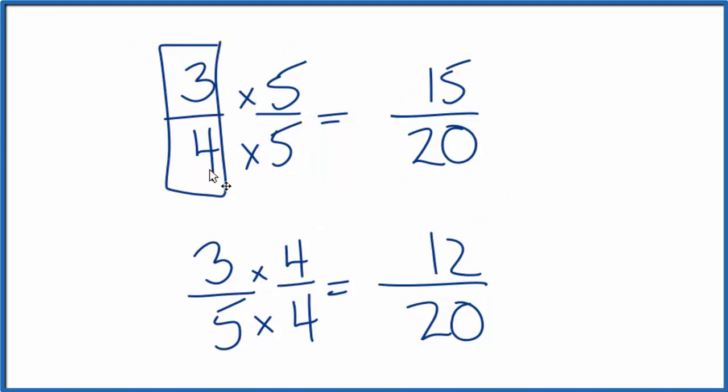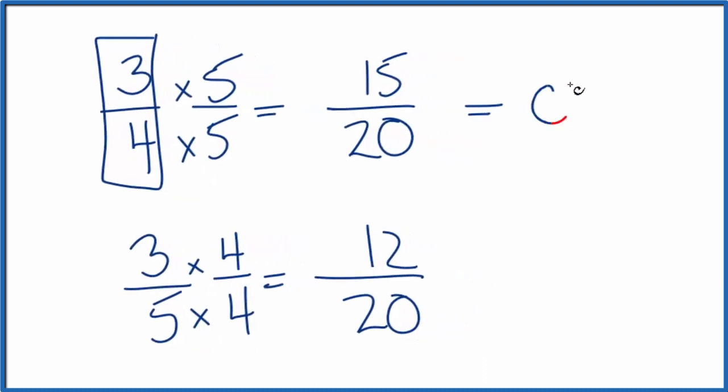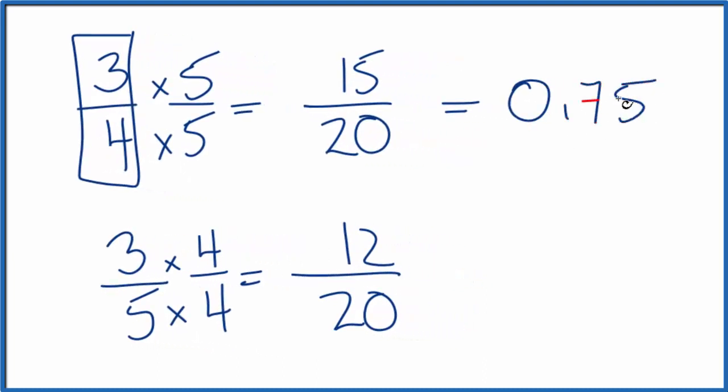We could also convert three-fourths or fifteen-twentieth to a decimal. We end up with zero point seven five. These are equivalent fractions. Down here, we could divide three by five or twelve by twenty.